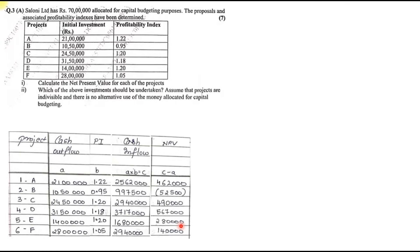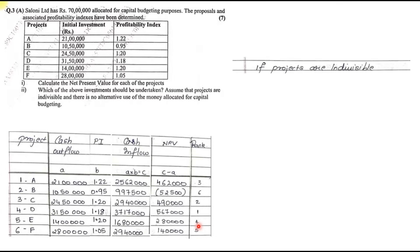After calculating NPV, make another column and rank the projects from highest to lowest NPV, because the second part requires ranking. Project D has the highest NPV, then Project C, then Project A, then Project E, and so on. Now we have to select multiple alternatives to maximize NPV. The heading for the second part is 'if projects are indivisible' — you cannot take half; you must take the full value.